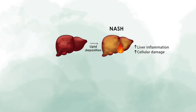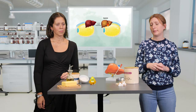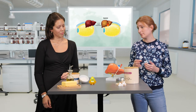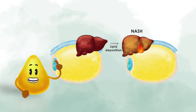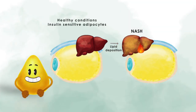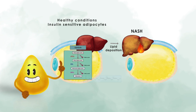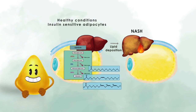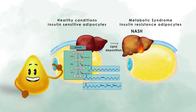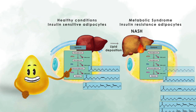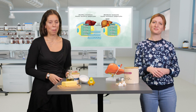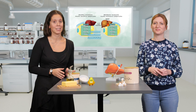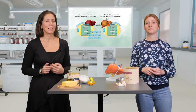A lot of the fat is coming from the adipose tissue. Under normal, healthy conditions, we have insulin-sensitive adipocytes, where insulin is capable of inhibiting the breakdown of fat — this is called lipolysis. However, one of the key features of the metabolic syndrome is insulin resistance, which leads to unregulated lipolysis. Therefore, free fatty acids spill over into the blood, which end up in the liver, making adipose tissue lipolysis an important source of fatty acids that promote NAFLD.